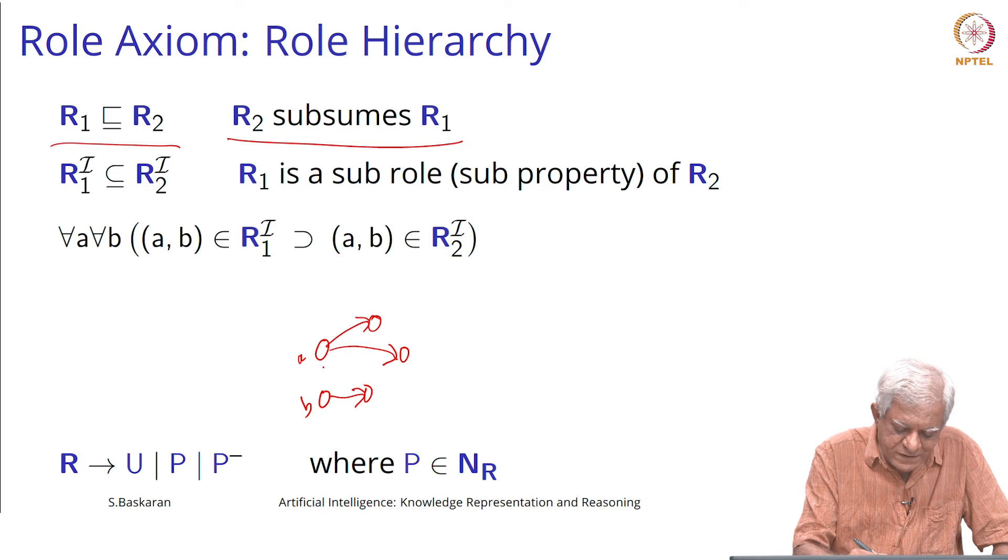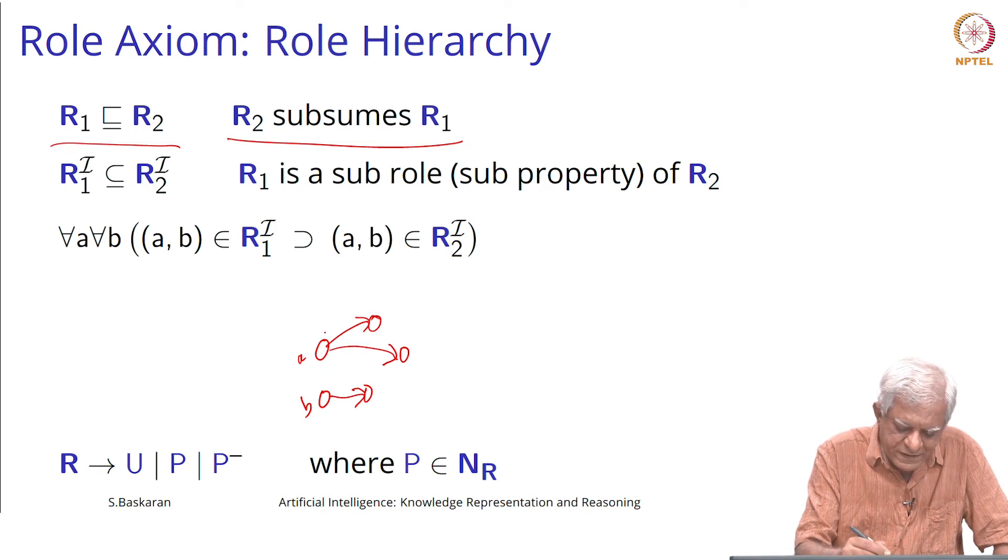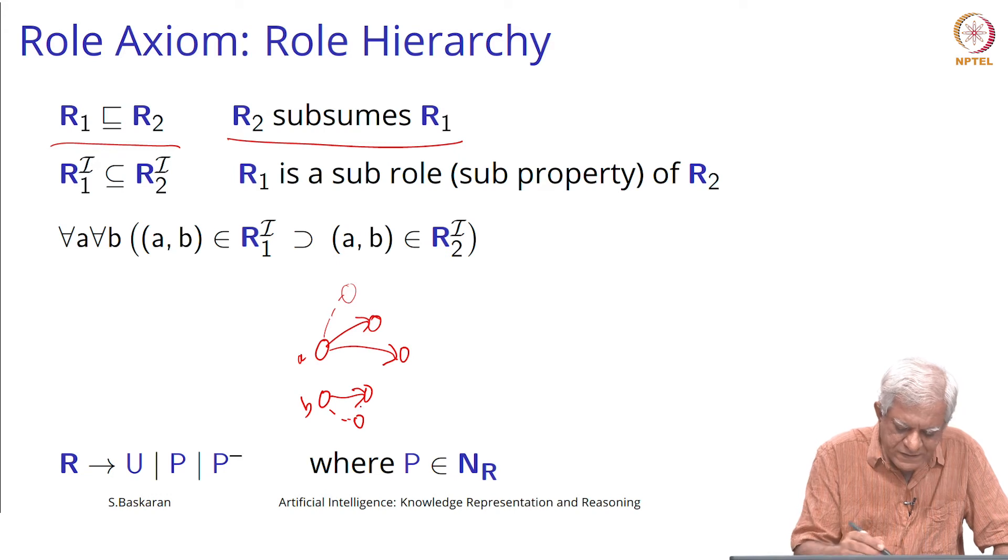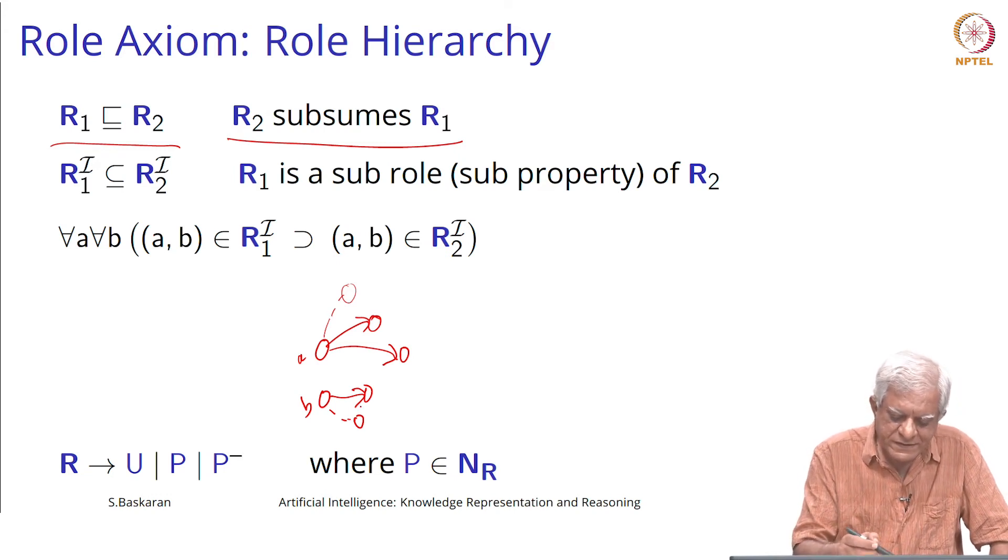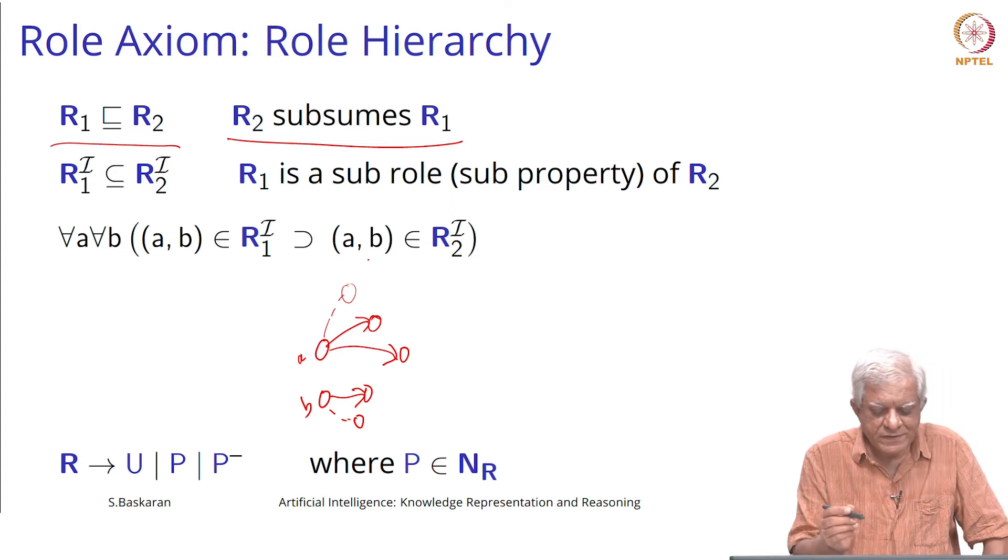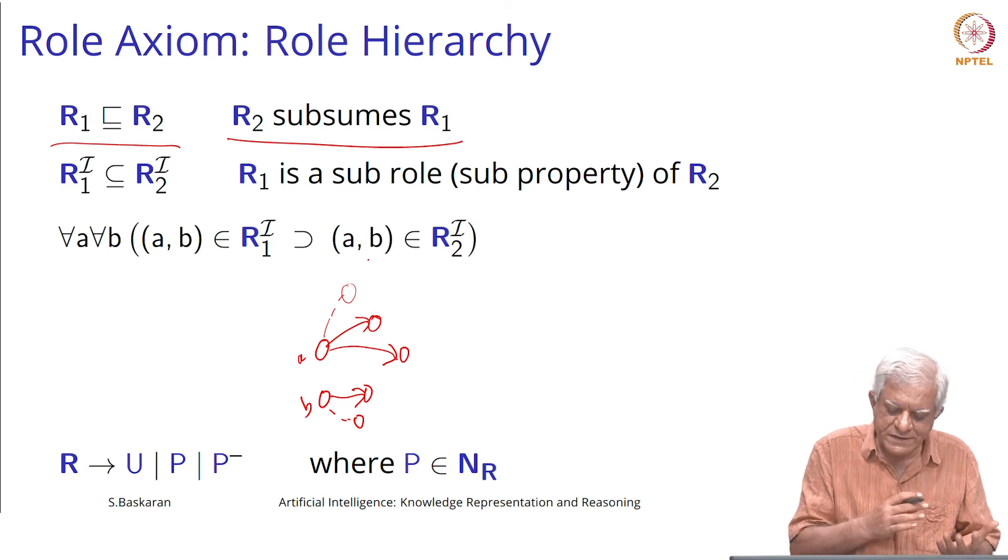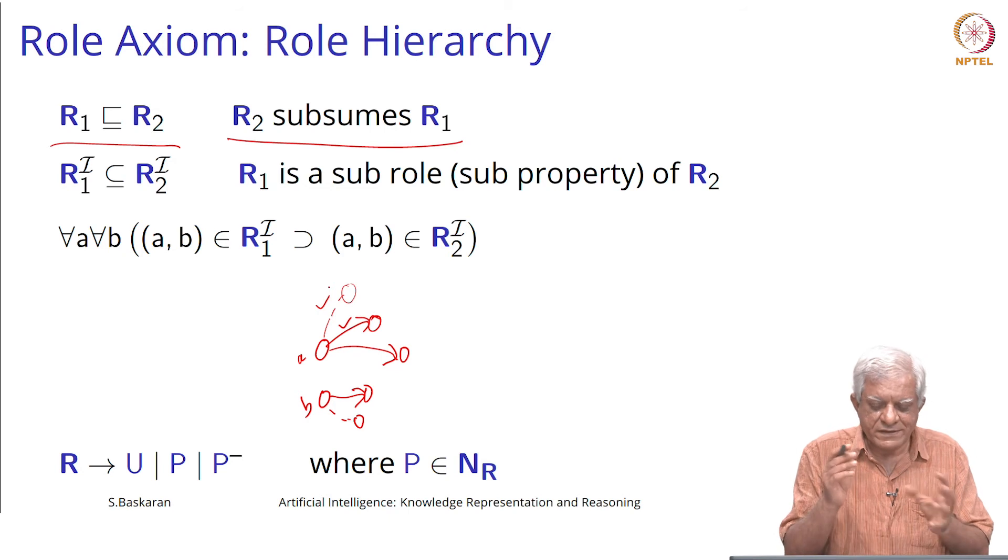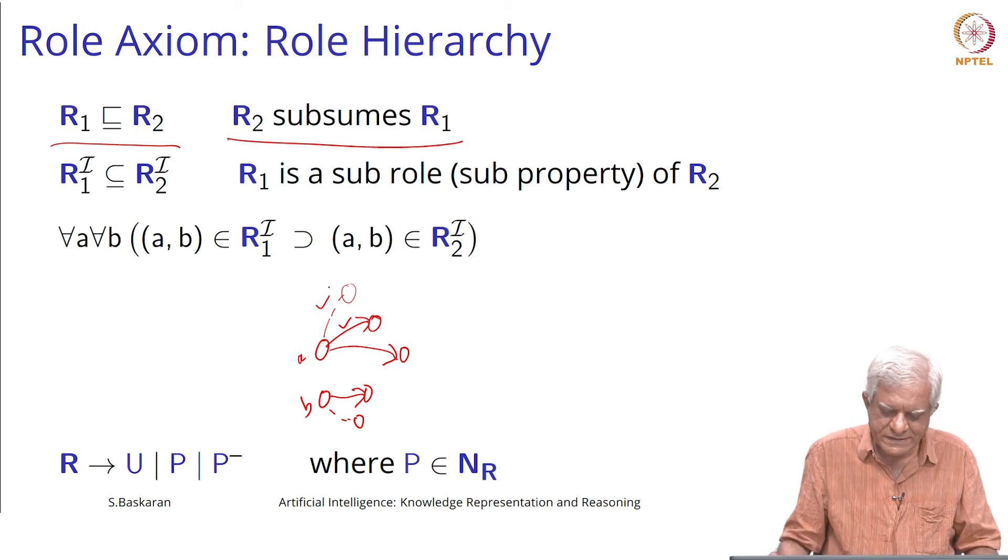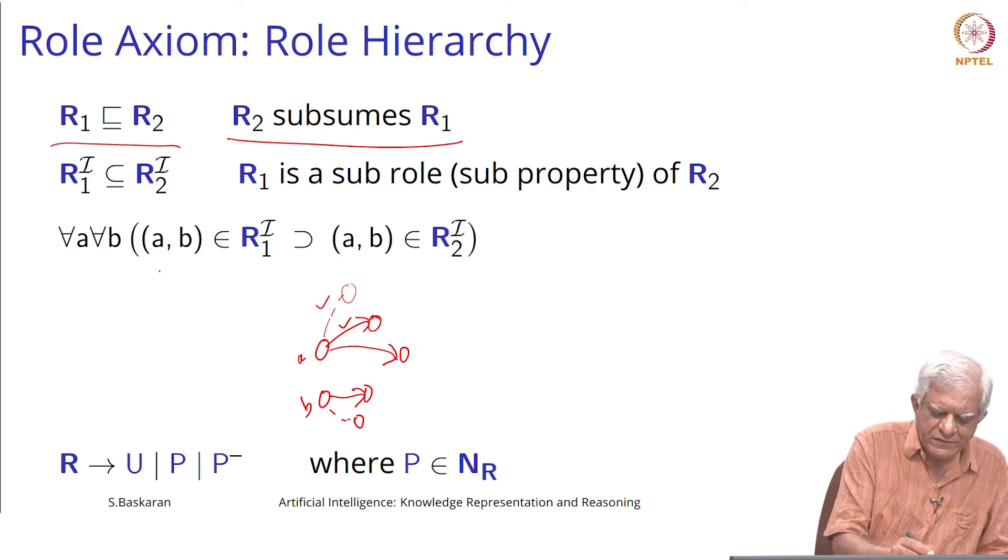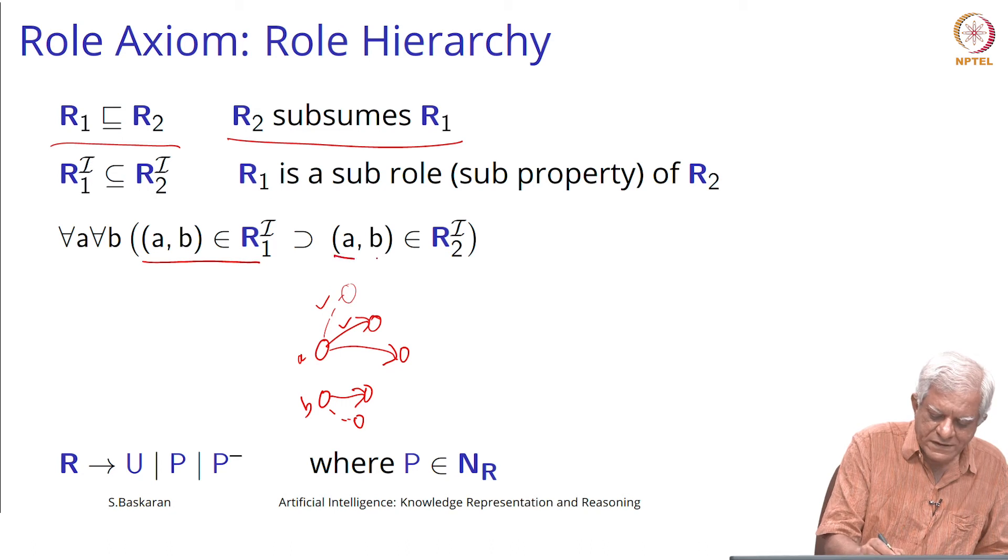If A had a sister as well and B also had a sister as well, then this new relation which is the union of the full arrows and the dash arrows subsumes the brother. Basically sibling relation which says that either this kind of arrow or this kind of arrow, then that obviously is a super set of the brother relation. Formally we would say that if (a,b) belongs to R1, then (a,b) also belongs to R2.